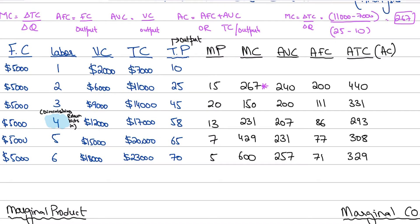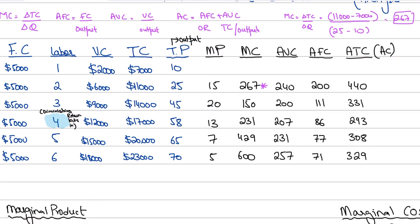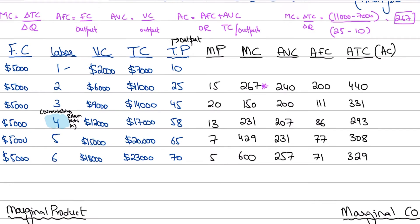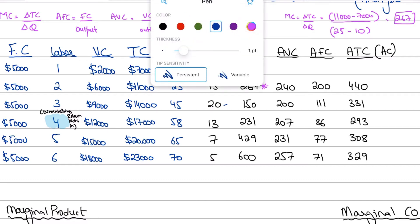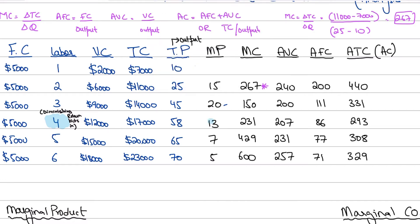Since the marginal product is given, you can see that initially when we have one worker the total product is 10, and when we add another worker it jumps to 25, giving a marginal product of 15. With the third worker, marginal product rises to 20, but from the fourth worker diminishing returns sets in and marginal product falls to 13. With the fifth and sixth workers, it falls more steeply to 7 and then 5.